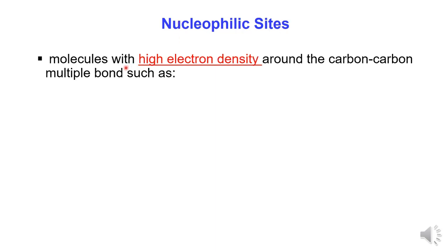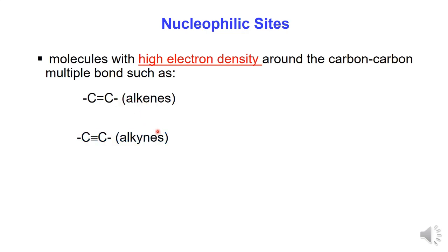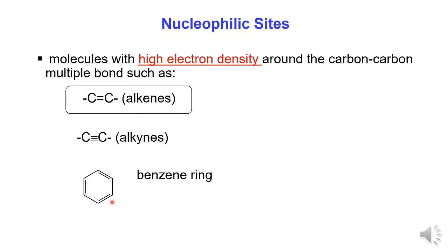Nucleophilic site: A molecule with high electron density around a carbon-carbon multiple bond, such as alkene molecules which contain a carbon-carbon double bond, alkyne molecules which contain a carbon-carbon triple bond, and benzene ring which contains carbon-carbon double bonds in the ring.